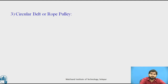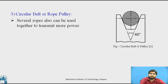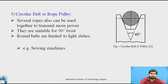The third type is the circular belt or rope pulley. This figure indicates the pulley and the rope — the rope is circular in shape. Several ropes can be used together to transmit more power. They are suitable for a 90-degree twist. The round belts are limited to light duty machines — if the load is heavy, we cannot recommend the round belt. Example: the sewing machine — if you visit a tailor shop, they are using the circular belt pulley.